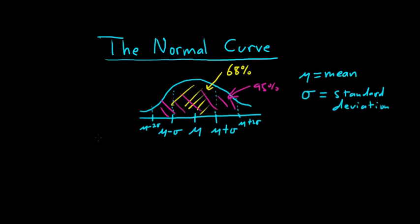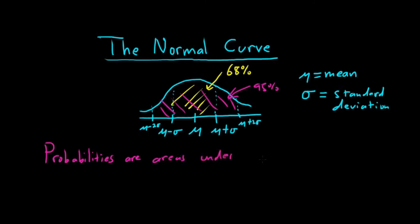So what is this curve for? It turns out that probabilities are areas under the curve.